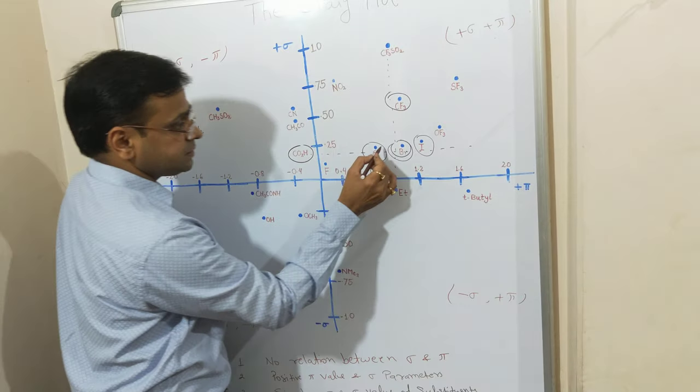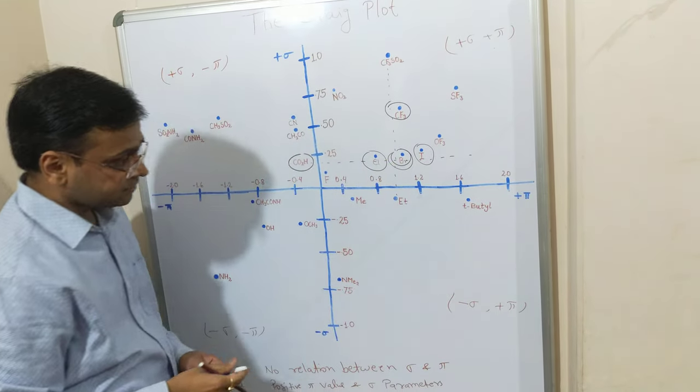Similar sigma values like chloro, bromo, iodo - such types of similar sigma values.